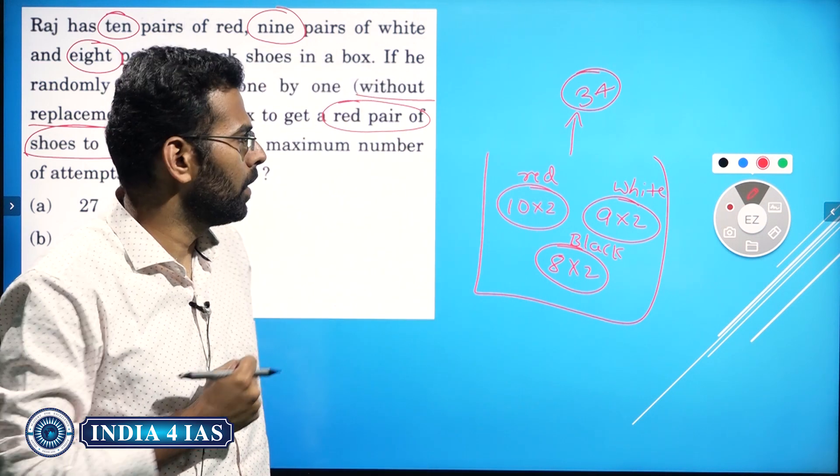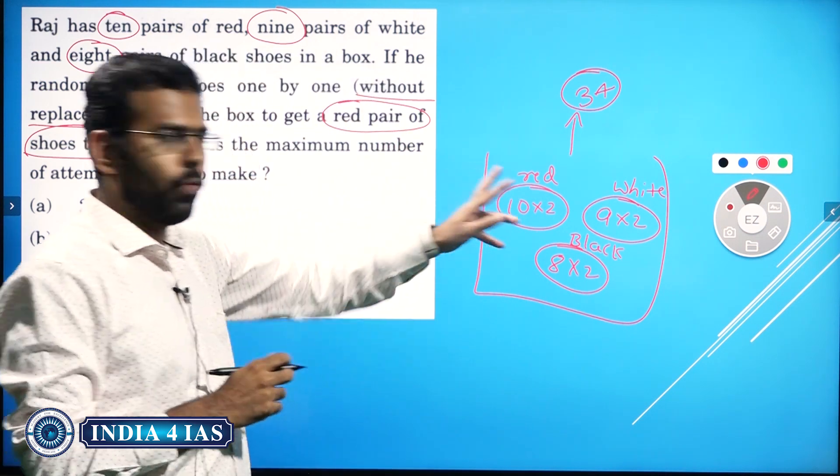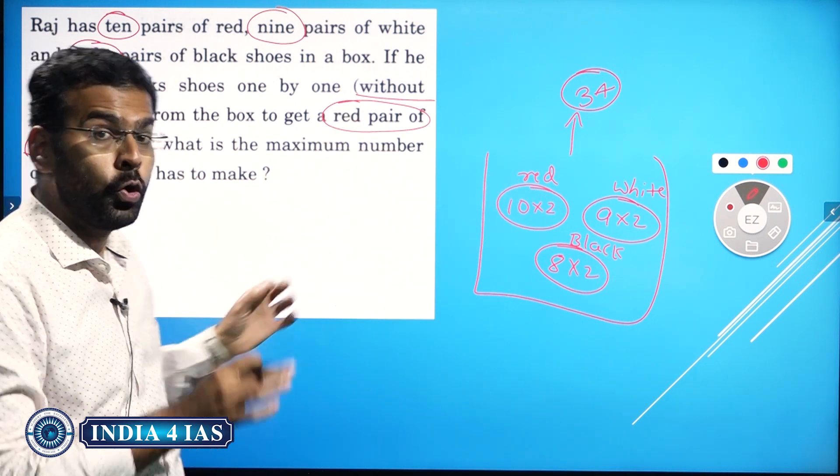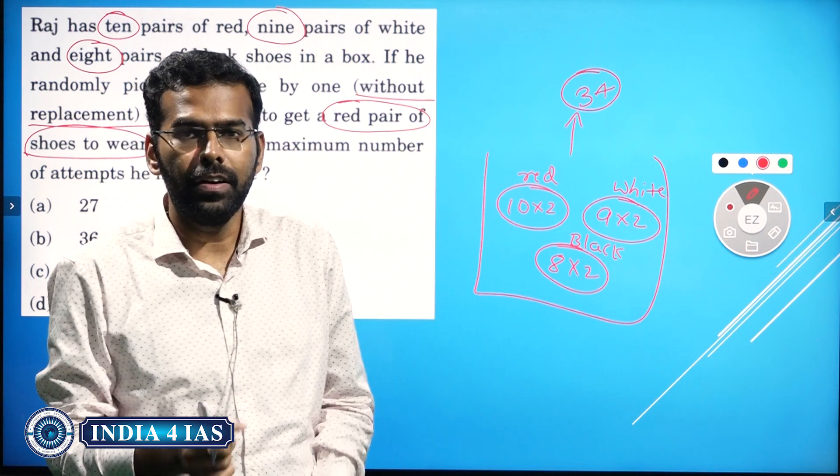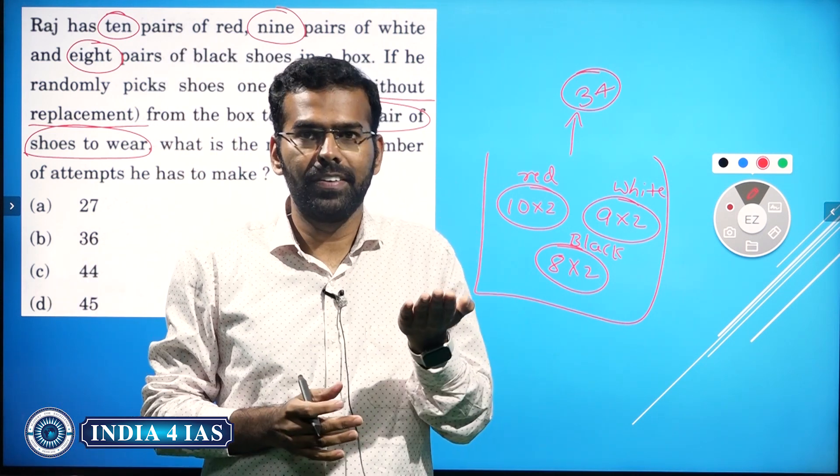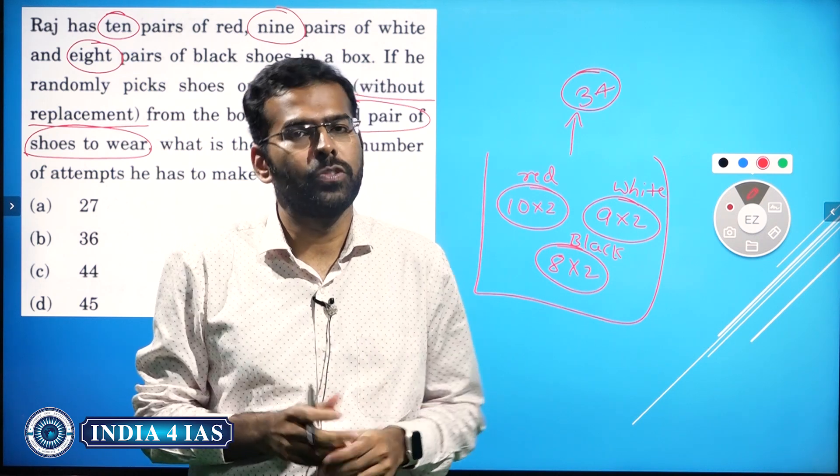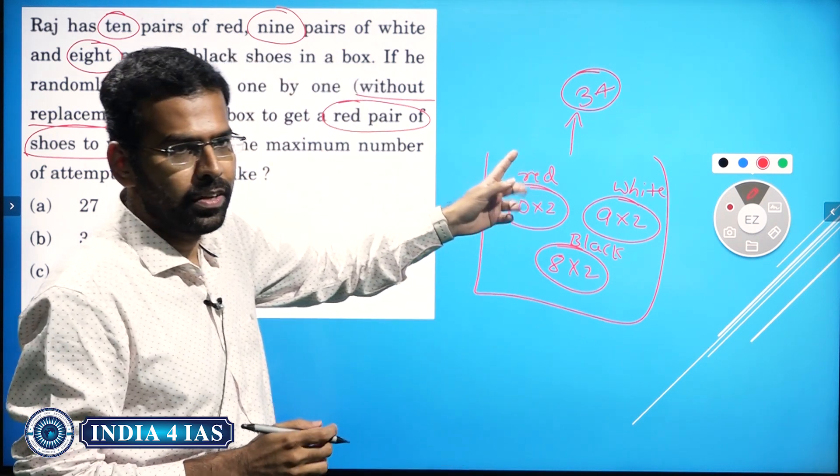But normally questions will be like this, but here he is saying 'a pair of red shoes to wear.' That means, to wear, you have to get a left shoe and a right shoe - left leg shoe and right leg shoe. This is very important here.